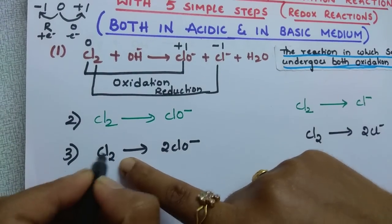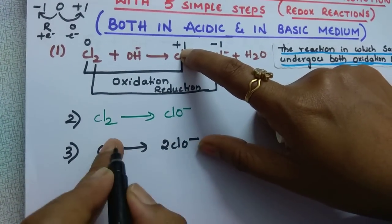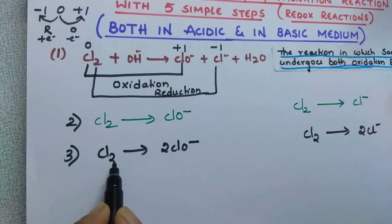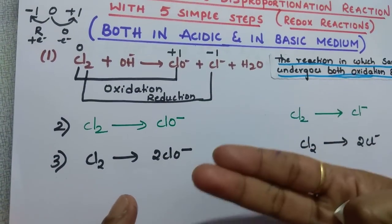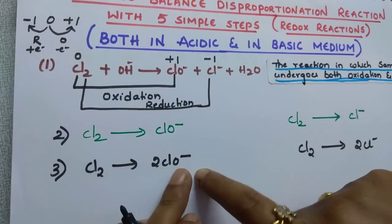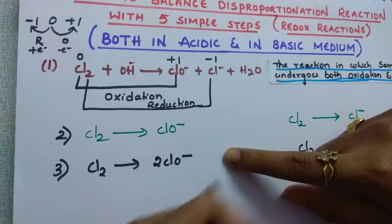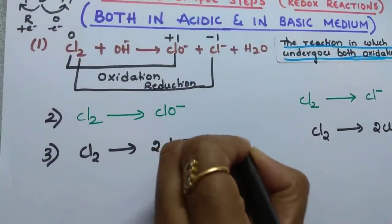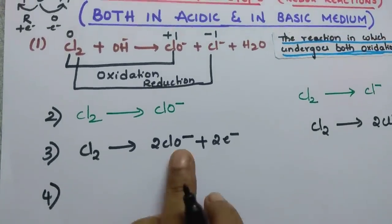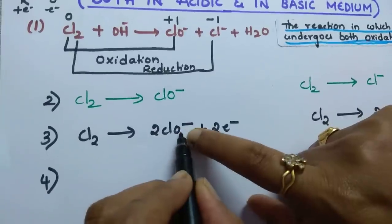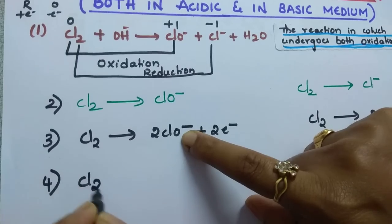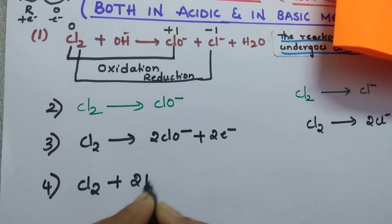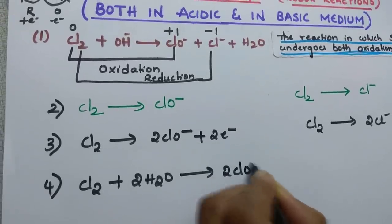For the oxidation half-reaction: Cl₂ changes from 0 to plus 1 — a difference of 1 per chlorine atom. With 2 chlorine atoms, the change is 2, meaning 2 electrons. Since this is oxidation (loss of electrons), add 2 electrons to the right-hand side. Now balance oxygen: there are 2 oxygens, so add 2 H₂O on the left. The reaction becomes: Cl₂ plus 2H₂O gives 2ClO⁻ plus 2 electrons plus 4H⁺.